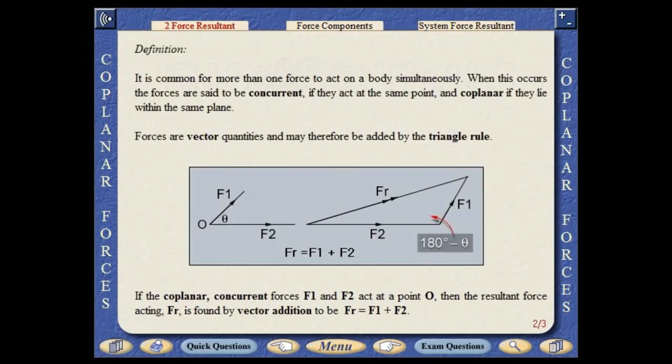It is common for more than one force to act on a body simultaneously. When this occurs, the forces are said to be concurrent if they act at the same point and coplanar if they lie within the same plane. Forces are vector quantities and can therefore be added by the triangle rule.